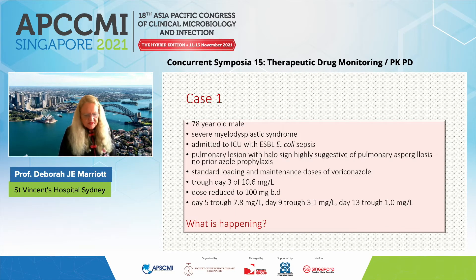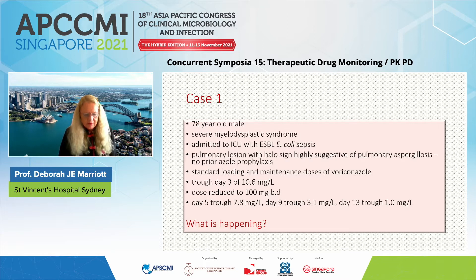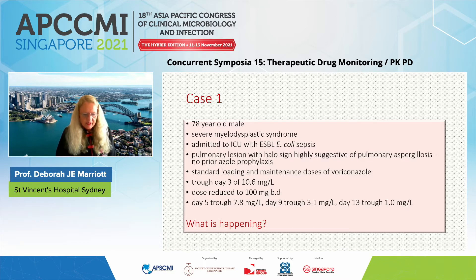The first case is a 78-year-old man with severe myelodysplastic syndrome admitted to the intensive care unit with ESBL E. coli sepsis. He had a pulmonary lesion on his admission CT scan showing a halo sign, highly suggestive of pulmonary aspergillosis, and no prior azole prophylaxis. Given standard loading and maintenance doses of voriconazole, a trough concentration on day three was very high at 10.6 — about double the recommended upper limit. His dose was reduced to 100 milligrams per day and the trough fell to the lower limit of the therapeutic range.